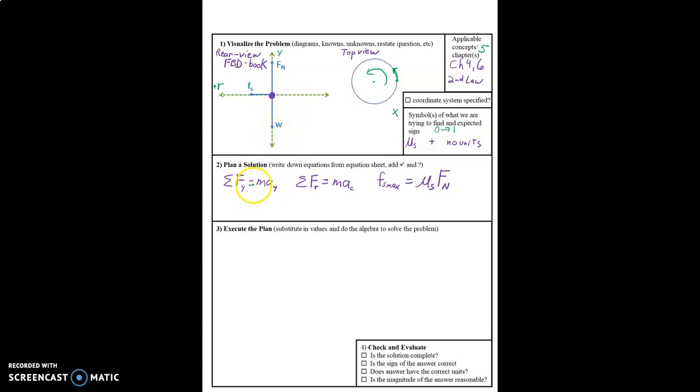Now we're going to proceed with our plan which is to use these three equations. We have normal force minus weight equals m a y and the book is not changing height throughout the entire time. So it has zero acceleration in the y direction. In the r direction it's quite simple. We have fs and that's it equals m a c which is also equal to m v squared over r. And then we have this equation fs max equals mu s fn.